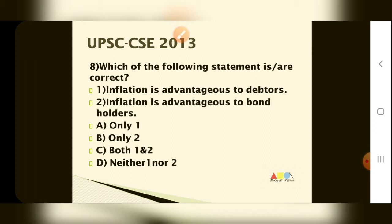Question number 8: which of the following statements are correct? Statement 1: inflation is advantageous to the debtor. Statement 2: inflation is advantageous to the bond holder. Now let's see what the impact of inflation is. Two important concepts: creditor and debtor. Creditor is the loan giver, debtor is the loan taker.